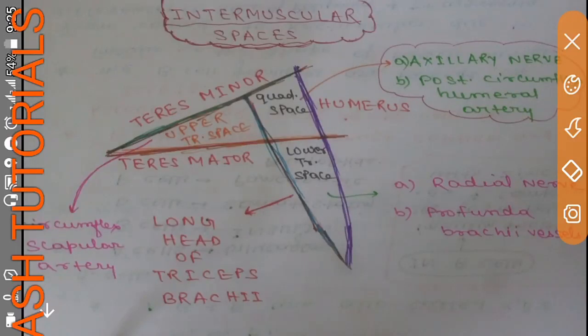Hello friends, we are going to discuss the intermuscular spaces. There are three intermuscular spaces: upper triangular space, lower triangular space, and quadrangular space. This is the line diagram I have drawn here.